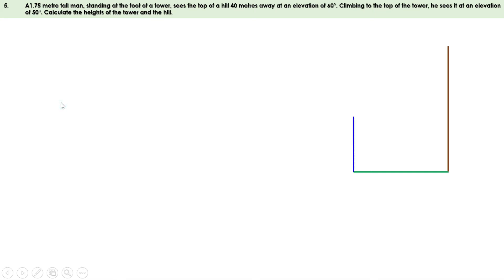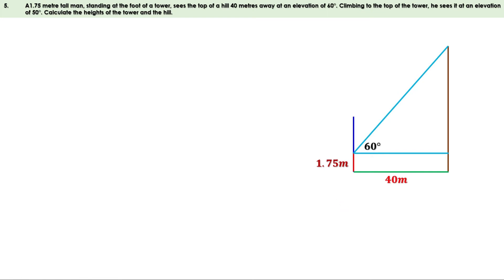There is a hill and there is a tower smaller than the hill. The distance between them is 40 meters. There is a man standing at the foot of the tower — his height is 1.75 meters. From here he sees the top of the hill at an elevation of 60 degrees. Angle of elevation means he looks straight first then upwards; the angle between them is 60 degrees. Now he climbs to the top of the tower. From there he sees the top of the hill at an elevation of 50 degrees.